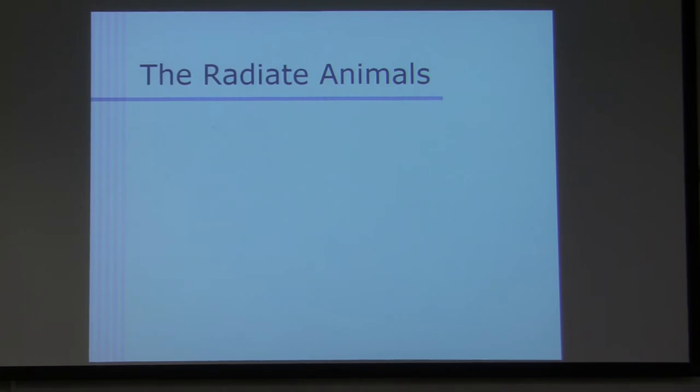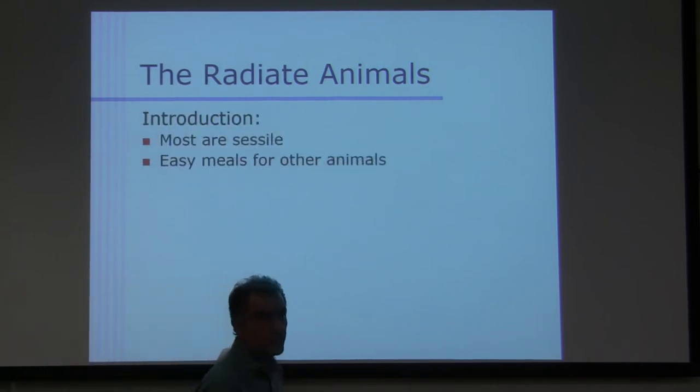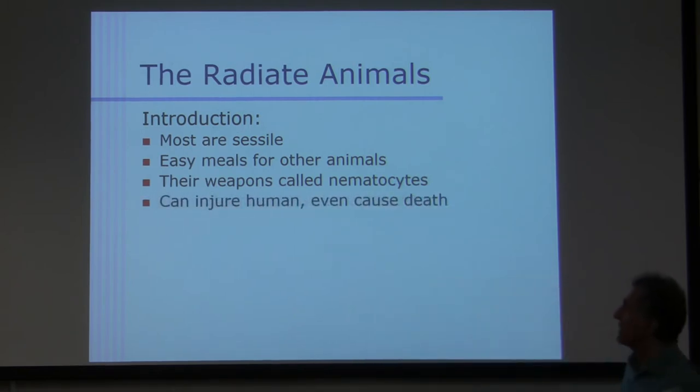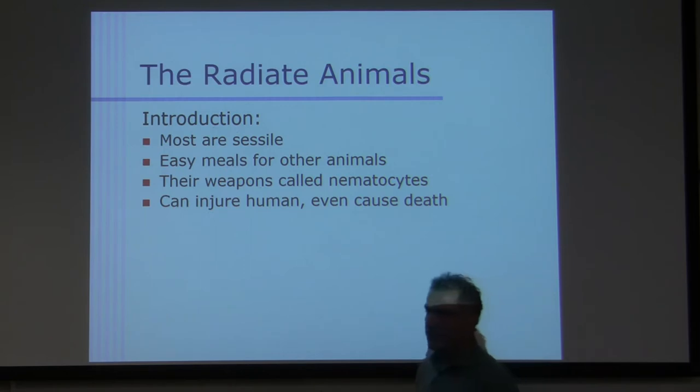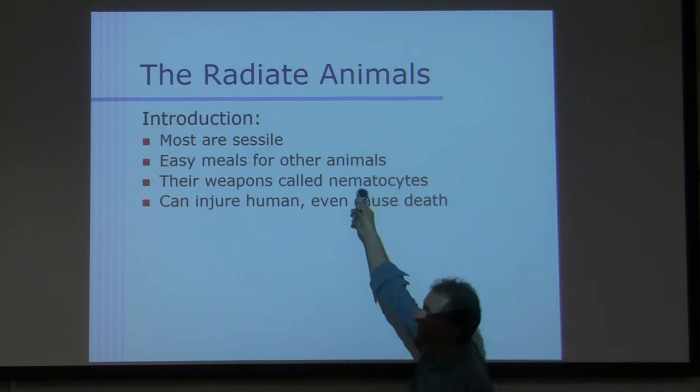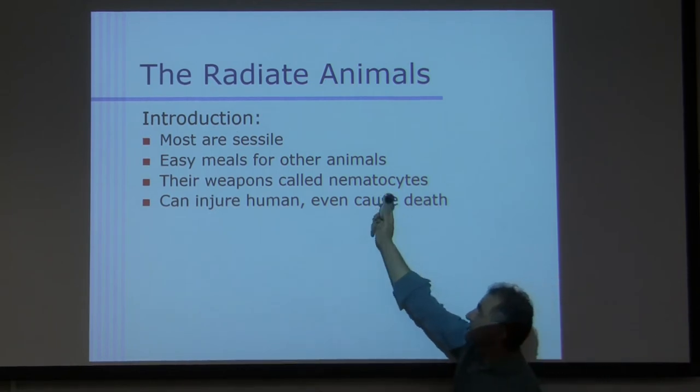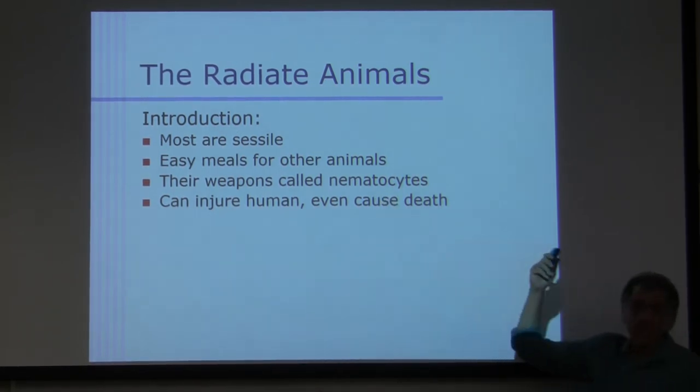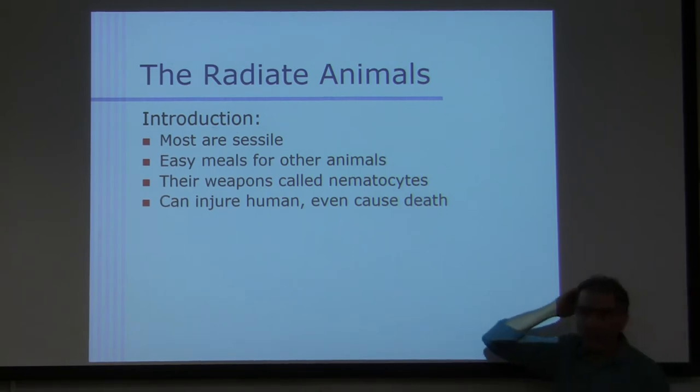Radiate animals, the next group of animals, you saw the video this morning on radiate animals. Radiate animals, I didn't bring them here, but I will bring them on Tuesday and go over it. So what happens with radiate animals, most are sessile and easy meals for other animals, unlike sponges. Sponges are not easy meals for other animals because of the features we talked about. But these guys are easy meals for other animals. They have a weapon, it's called nematocyst, and I will go over that. And we do have slide of nematocyst in the lab, they look like sperm. But that's nematocyst. And they can injure human, even cause death. They can kill humans, the most dangerous ones.